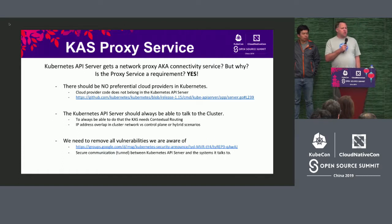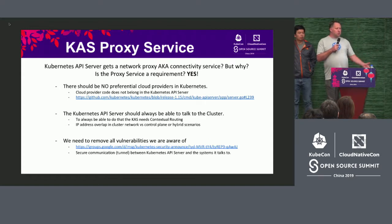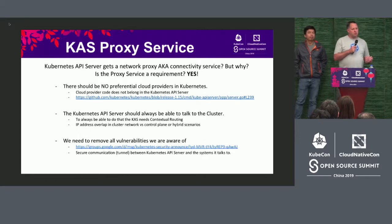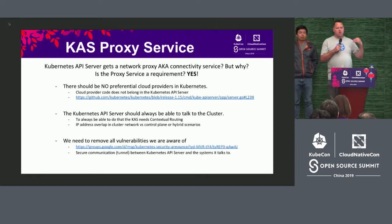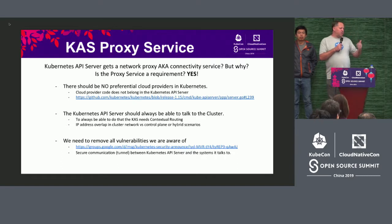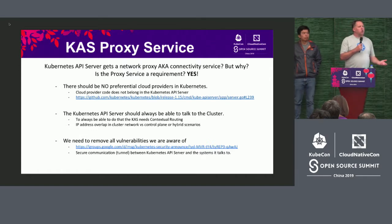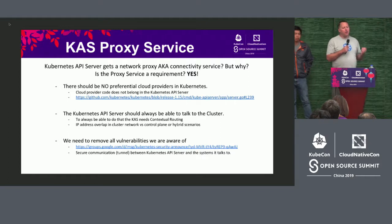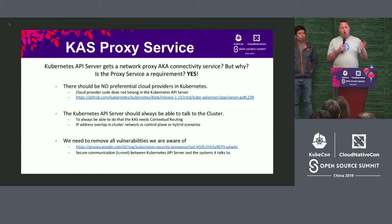Another big requirement is that the Kube API server should always be able to talk to the cluster it's serving. Most of the time communication is in the other direction — the cluster talks to the Kube API server. But there are interesting scenarios, such as hybrid clouds, where it's actually not easy to have the Kube API server talk to the cluster.